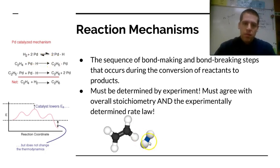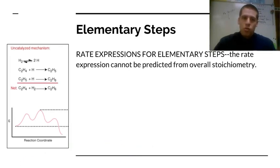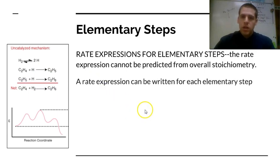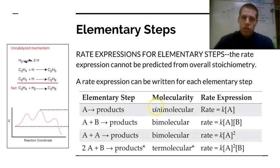We have to say that the hydrogen first has to break apart, and then it can attach here, and then one can attach there. We can write rate expressions for the elementary steps, which are just those intermediate steps in the reaction. It can't be predicted from the overall stoichiometry. We have to actually write out a proposed mechanism to help us understand what's going on, and we can write a rate expression for each of those.